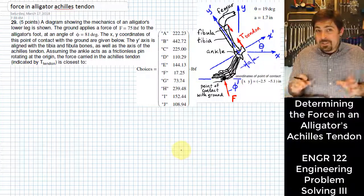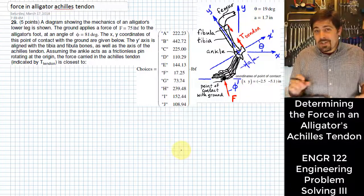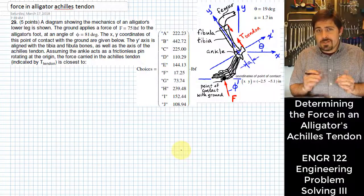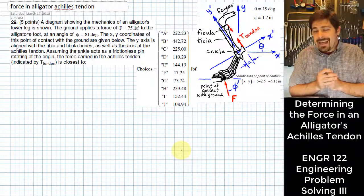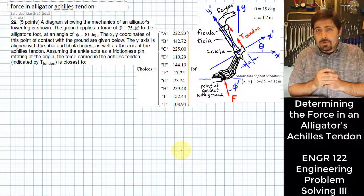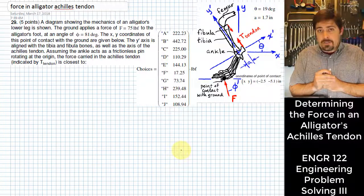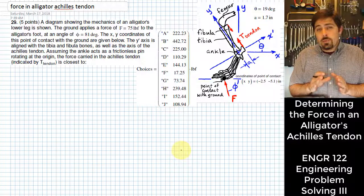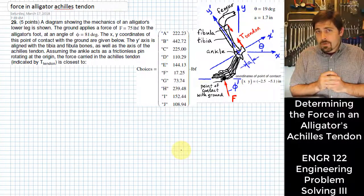If you're like most people, you've probably wondered at some point in your life just how much force does the Achilles tendon of an alligator carry when it pushes on the ground with a force of 75 pounds? Well, you don't have to wonder anymore because we're going to solve that problem today.